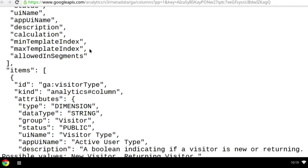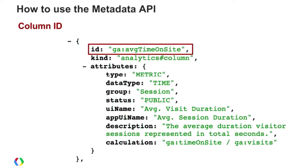It comes back and we get all this great information. The most important part for the Core Reporting API or other Google Reporting APIs is the ID. This represents the entire dimension or metric, and that's the name you actually use when you query it for the reporting data. For example, we have 'average time on site' — that's the ID.